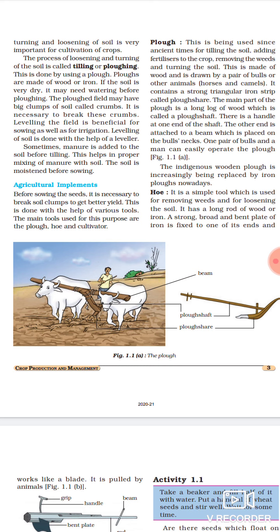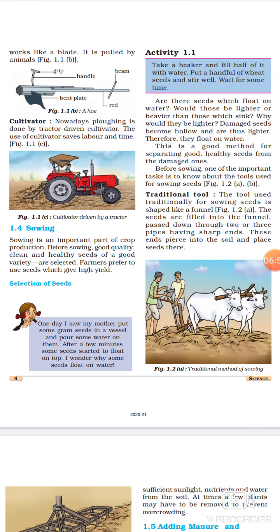Hoe mein bhi ek lambi si rod hoti hai, woh ya toh wood se bani ho sakti hai ya phir iron se. A strong, broad and bent plate of iron is fixed to one of its ends, which works like a blade. It is pulled by animals. Aap diagram mein dekh sakti ho, ek bent plate hai, ek rod hai - rod hamne bola ki yeh wooden ho sakti hai ya phir iron se bani ho sakti hai. Iske alawa ek handle hai usko pakarne ke liye aur grip bhi de rakhi hai, taaki hum usko better grip ke saath pakar sakein. Jo bent plate hai, woh blade ki tarah kaam karti hai. So this is hoe.